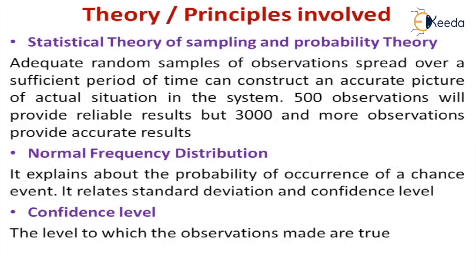It involves taking adequate random samples for a sufficient period of time to construct an accurate picture of the system. Normally 500 observations will provide a relevant result, and around 3000 observations and more will give accurate results, so that many observations have to be periodically made. The normal frequency distribution explains the probability of occurrence of a chance period — every time we cannot do the same job at the same time, so there is always a possibility of a chance period.